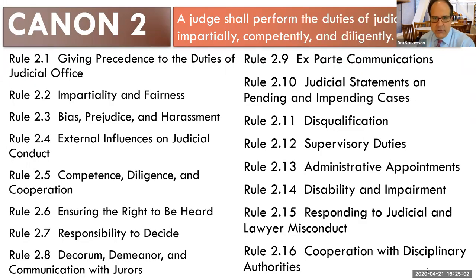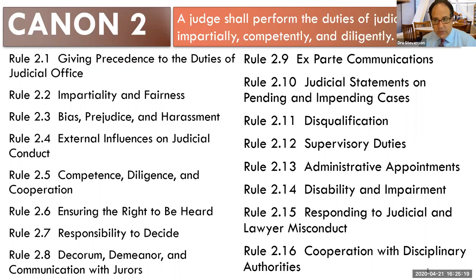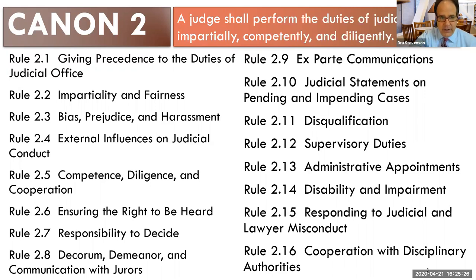Looking at Canon 2, there are 16 different rules under it. Each of these rules has multiple sections — like A, B, C, D — and then subsections numbered 1, 2, 3, and so on under the rule itself. So there's really a lot to talk about here.